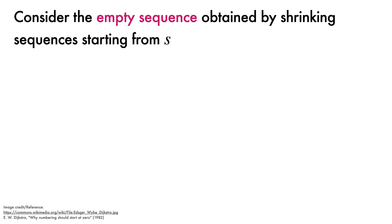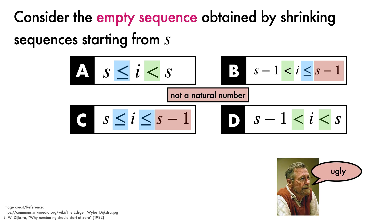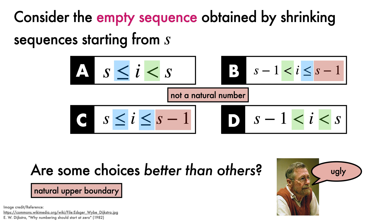The next consideration is what happens in the slightly odd case of the empty sequence formed by shrinking sequences starting from S until they have no elements. Here is how we can do that with our four familiar configurations of inequality operators. This time, B and C are forced to use an unnatural number as their upper bounds. Ugly, says Dijkstra. So, by considering the upper boundary, A and D are superior to B and C.